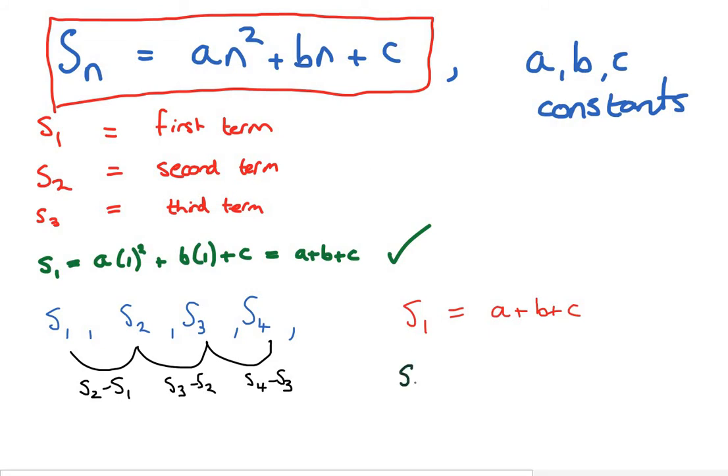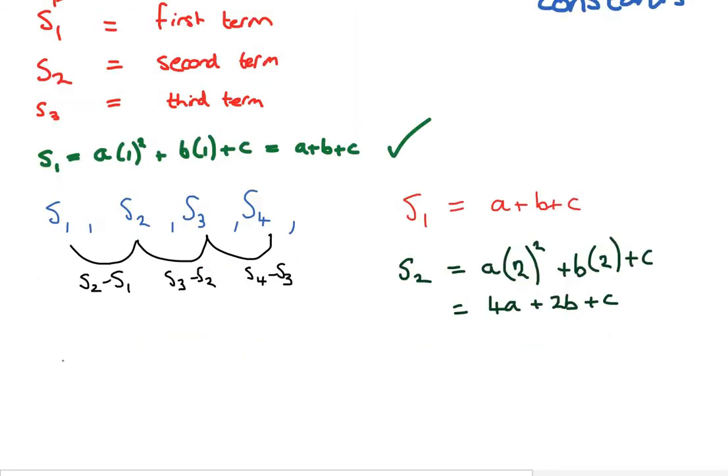And now, s2, again, all we've got to do is plug n equals 2 into our formula here. So, we get a times 2 squared plus b times 2 plus c. And if you work this out carefully, you will get 4a plus 2b plus c. Right, now let's take a look at the difference s2 take away s1. Which is, by the way, I'll just write it out. It's the second term. Take away the first term.